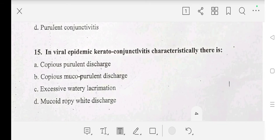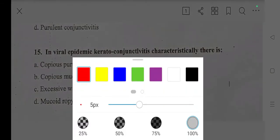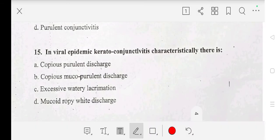Fifteenth question: in viral epidemic keratoconjunctivitis, characteristically there is copious purulent discharge, copious mucopurulent discharge, excessive watery lacrimation, or mucoid ropy white discharge? Answer is excessive watery lacrimation.